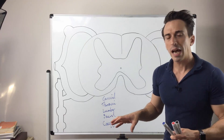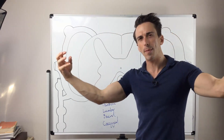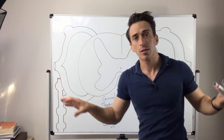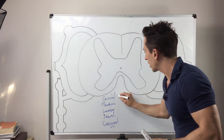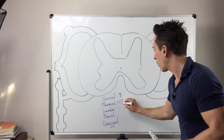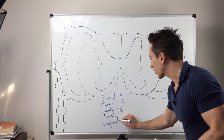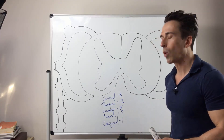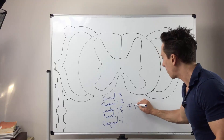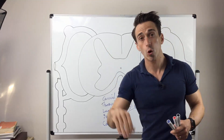Each segment has spinal nerves associated with it — nerves that shoot out or come back in, and they're paired on either side. The cervical region has 8 spinal nerve pairs, the thoracic has 12, the lumbar has 5, the sacral has 5, and the coccygeal has 1 spinal nerve pair. If you add them all up, that ends up being 31 pairs of spinal nerves going down your entire spinal cord.